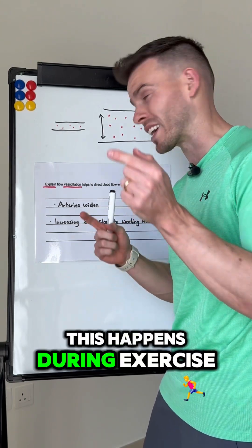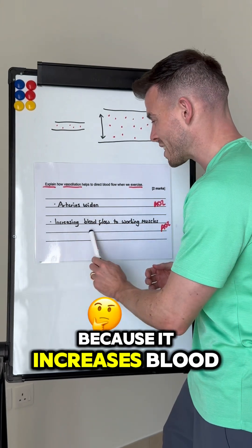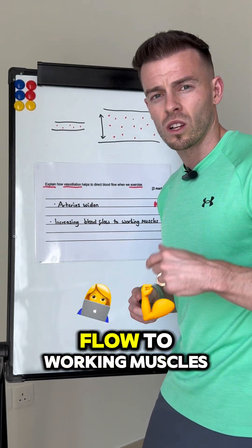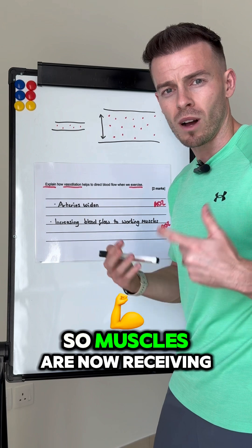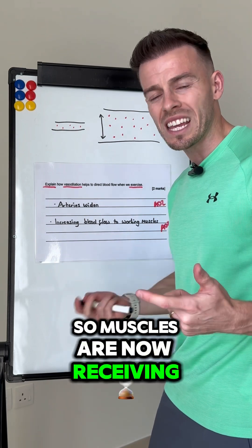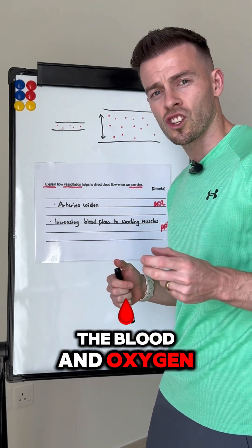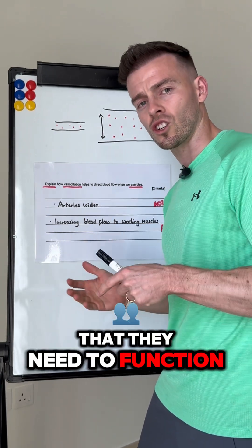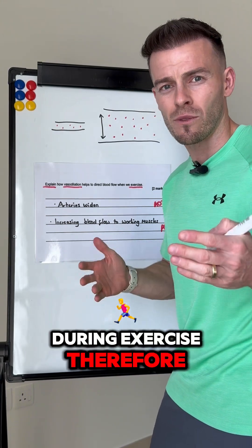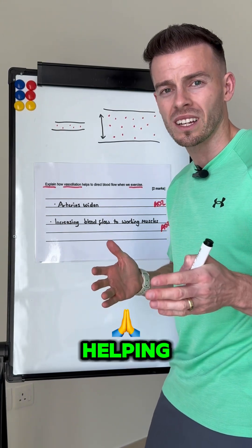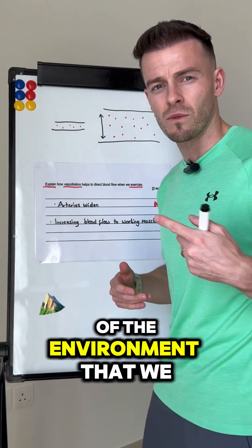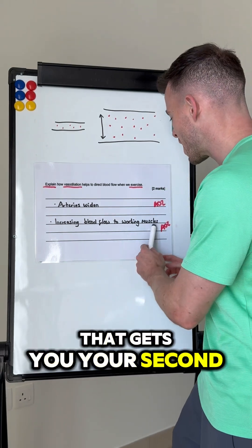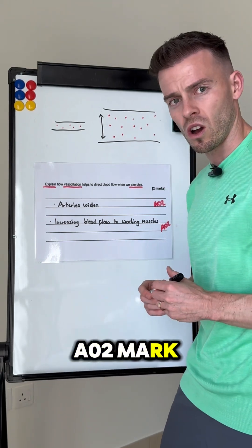This happens during exercise because it increases blood flow to working muscles. Muscles are now receiving the blood and oxygen that they need to function during exercise, therefore helping us meet the demands of the environment that we are in. That gets you your second AO2 mark.